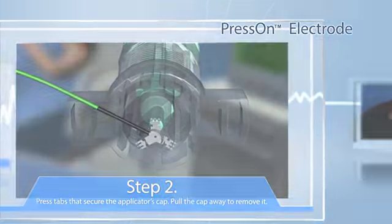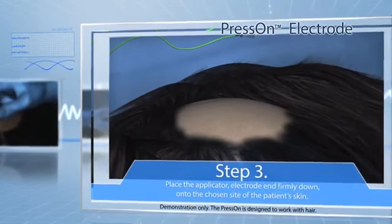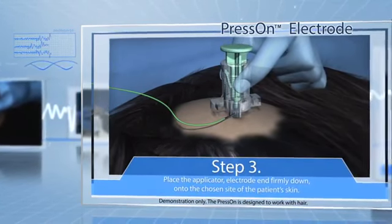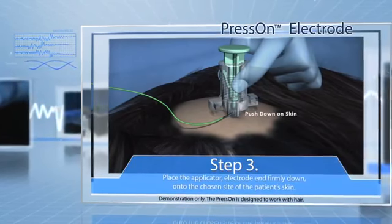Step 3: Without touching the plunger, firmly place the applicator, electrode end down touching the skin, onto the chosen site of the patient.